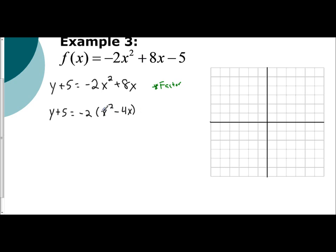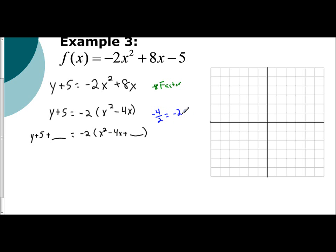Now that I have a leading coefficient of 1, I can complete the square. So y plus 5 plus our placeholder equals negative 2 times the quantity x squared minus 4x plus our placeholder. We take half of our b value — half of 4 is negative 2. Square that and we get a positive 4. So positive 4 goes in to create a perfect square trinomial.